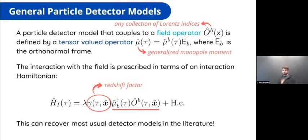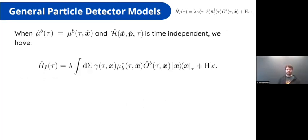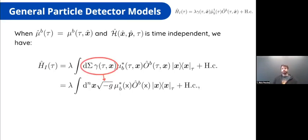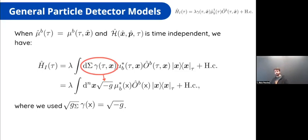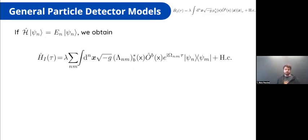What's good about this model is that it can recover most usual models found in the literature. If we assume the generalized monopole moment is only a function of the position operator, and the full detector Hamiltonian is time-independent, we can expand the interaction Hamiltonian in the position basis. When we do this, we can factor out the square root of the determinant of the metric — the covariant measure of integration — as the product of the redshift factor with the measure on the surfaces. Then, assuming discrete eigenfunctions with associated energy levels for the free Hamiltonian, we can expand in this eigenfunction basis.